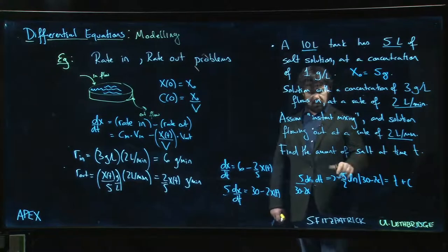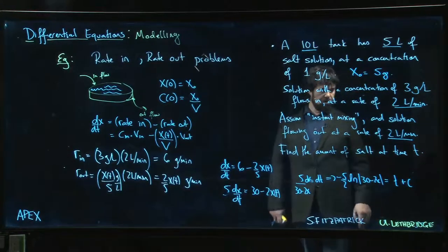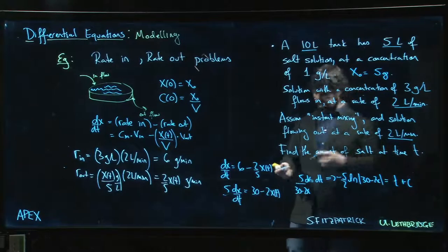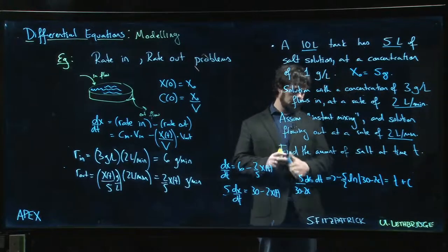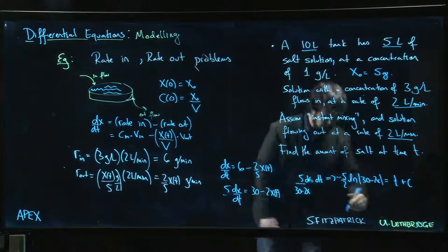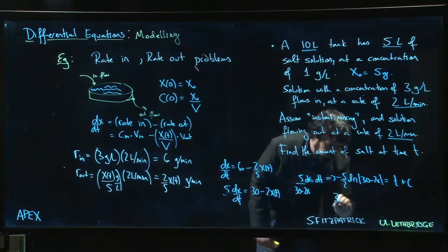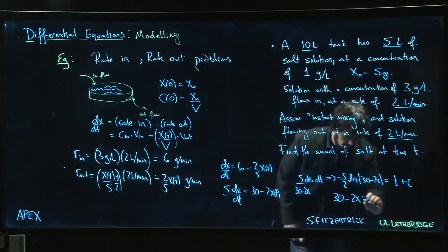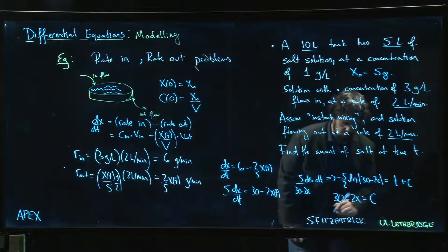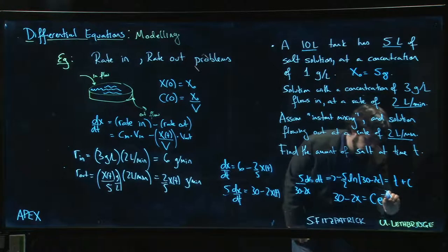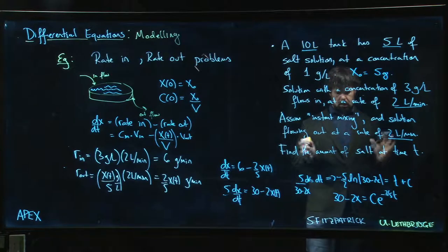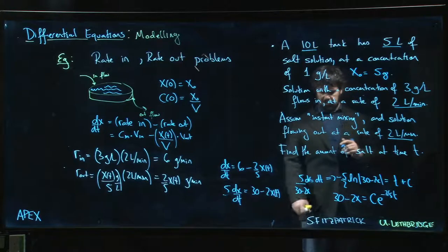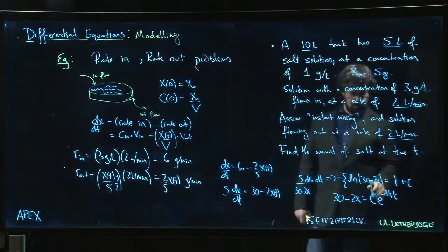Standard routine for this: multiply both sides by minus two over five, we use the e to the c, we write that as a different constant to incorporate the absolute value there, and we get 30 minus two x is equal to some constant, which we might call c, times e to the minus two over five t. Almost there - want to solve for x in this thing and we also want to figure out what that value of c is.